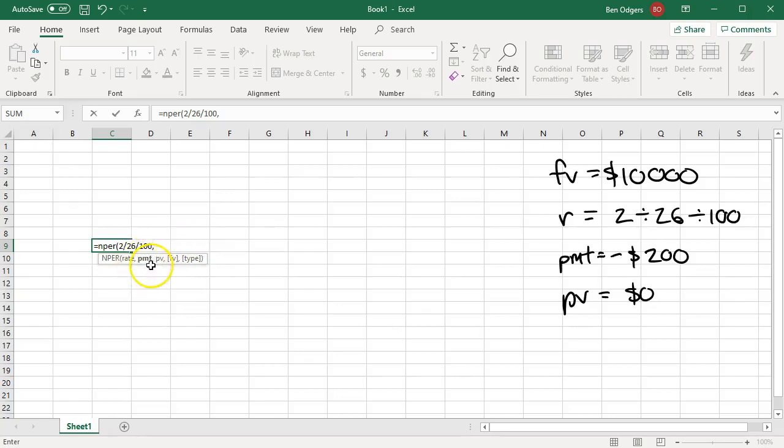Next we put in our repayment, which is negative $200. Negative 200, comma. We now put in our present value, which is $0. Zero, comma. Then our future value, $10,000. Finally, comma, we're putting in our type. Our repayments are going in at the end of the period, which means we put a zero down. Close our brackets and press enter.